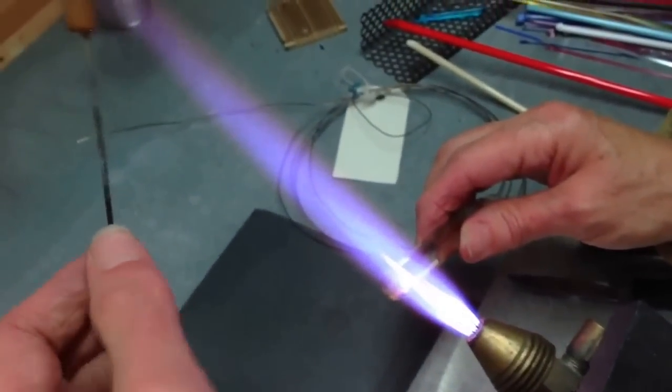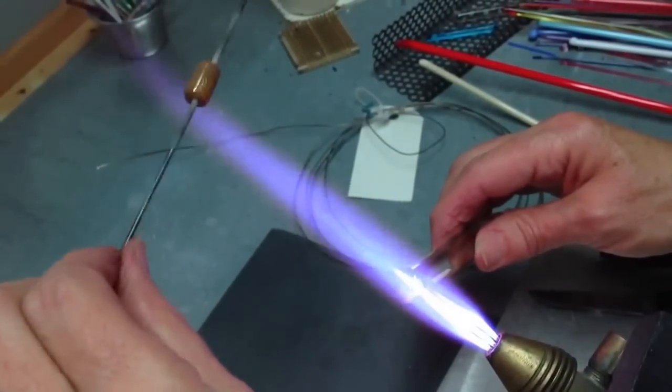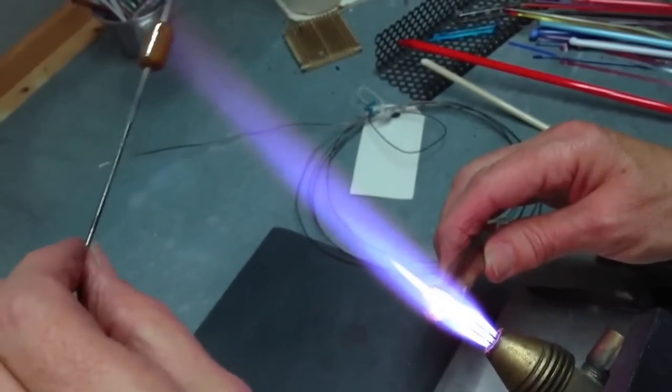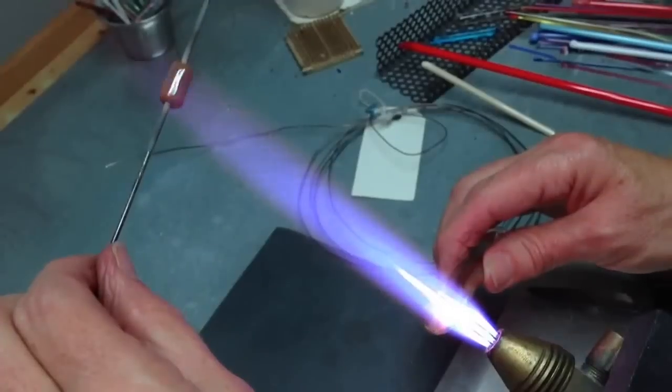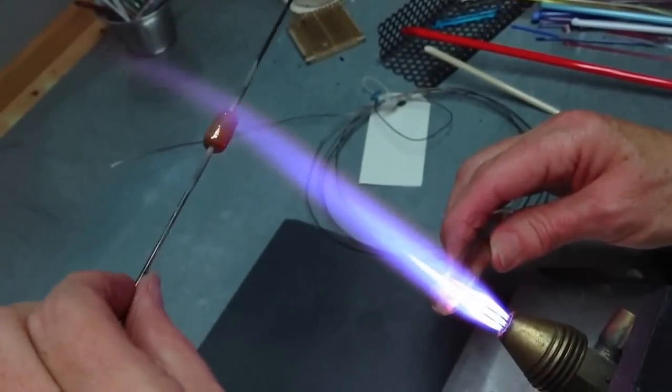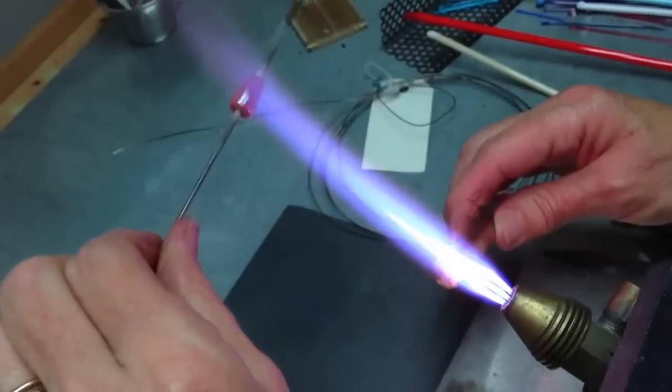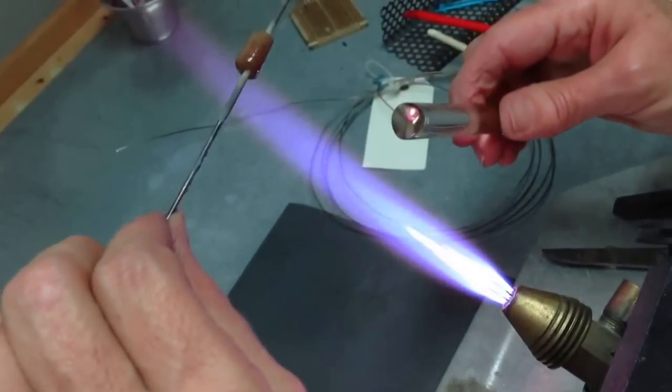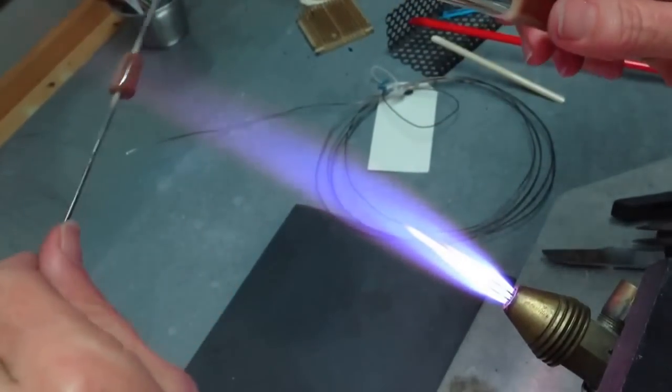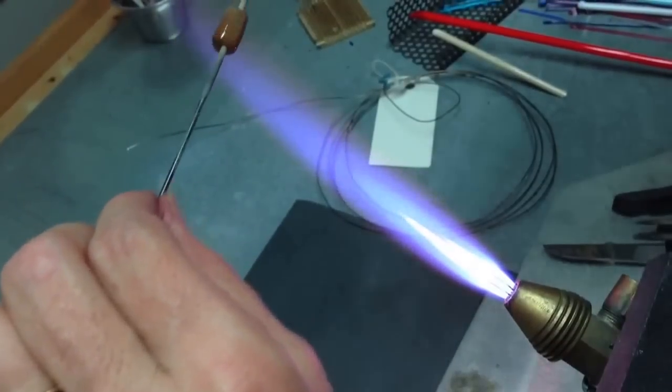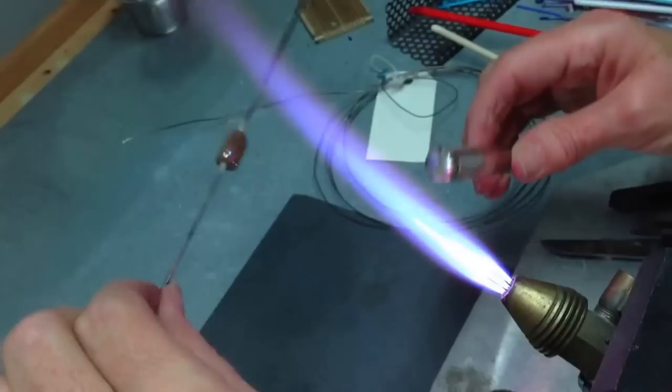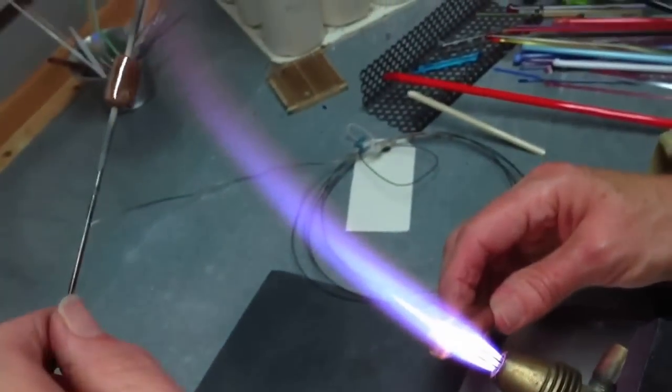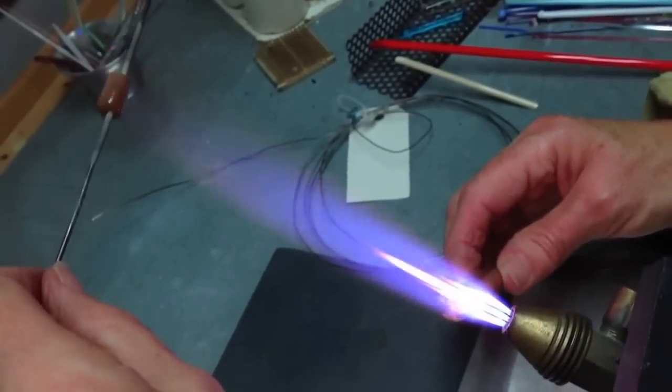My glass bead is cool enough. We're gonna do it again. I got it at the end of the flame—see how the color changes? The silver is moving all the way down the flame as a fume, as a vapor. Because it's on the end it just picks up that silver.